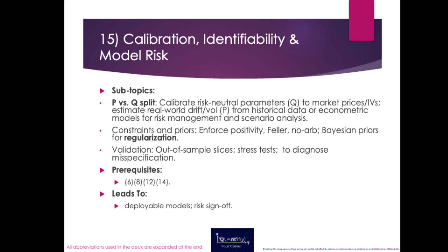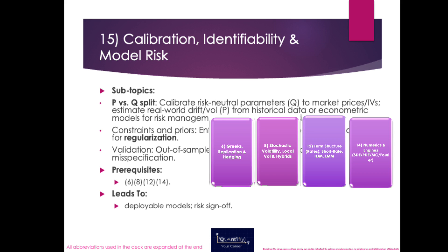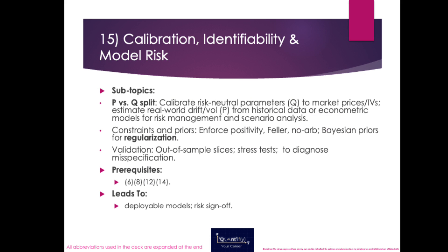Then calibration, identifiability, and model risk — turning models into deployable systems and knowing when a great fit is fragile. This includes the P-versus-Q calibration split, regularization and parameter bounds, multi-start search with constraints, and out-of-sample hedge P&L attribution. Prerequisites are topics 6, 8, 12, and 14. This delivers robust fits, cleaner diagnostics, and defensible sign-off with risk and governance.